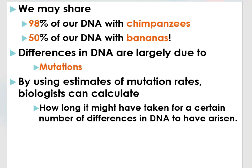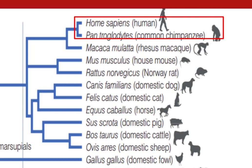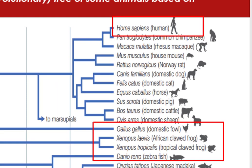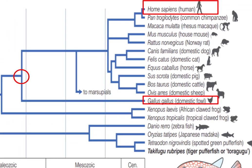Differences in DNA are largely due to mutations. By using estimates of mutation rates, biologists can calculate how long it might have taken for a certain number of DNA differences to have arisen. A phylogenetic or evolutionary tree of some animals based on differences in DNA shows that Homo sapiens is most closely related to Pan troglodytes (common chimpanzee), but is distantly related to domestic fowl, African clawed frog, tropical clawed frog, and zebrafish. Human beings and chimpanzees evolved from recent common ancestors, whereas humans and domestic fowl evolved from distant common ancestors.